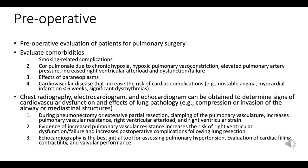Smoking-related complications: chronic smoking can lead to various lung pathologies and affect lung function, increasing the risk during surgery. Cor pulmonale is a condition where the right side of the heart fails due to prolonged high blood pressure in the pulmonary arteries, caused by chronic hypoxia, hypoxic pulmonary vasoconstriction, elevated pulmonary artery pressure, and increased right ventricular afterload.